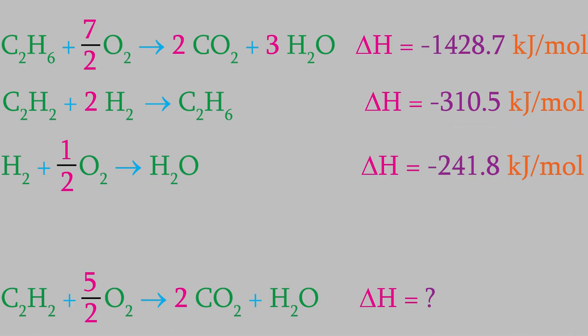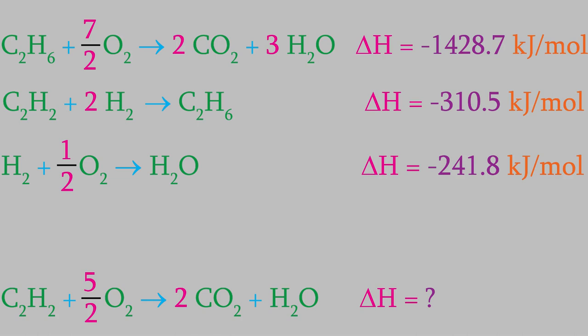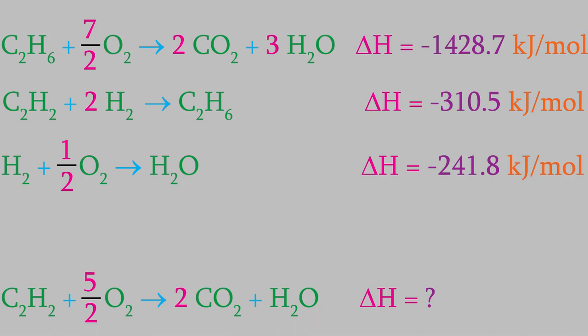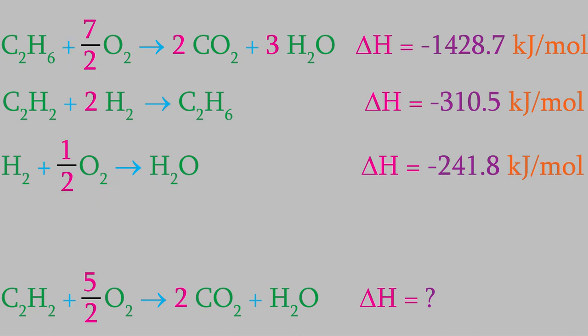We're still not done. The acetylene is now on the correct side of the arrow, but our three reactions still won't add to give us the overall reaction we want. Let's look at the other three compounds in the overall reaction. Oxygen appears in both the first and third reactions, so let's not work with oxygen. Carbon dioxide is a better choice — it only appears in the first reaction. We want two carbon dioxides on the right side in our overall reaction, and right now there are two on the right side in reaction number one. So those are correct; we don't need to change anything for the carbon dioxide to work out.